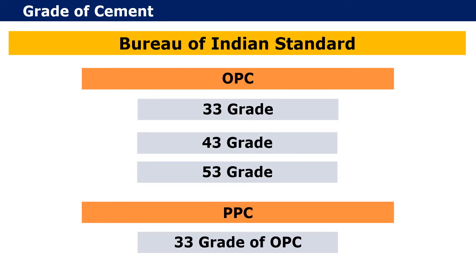Now let us see the grade of cement. As per the Bureau of Indian Standards classification, OPC is available in 33 grade, 43 grade, and 53 grade, whereas PPC is available in 1 grade and its strength matches the strength of 33 grade OPC after curing.